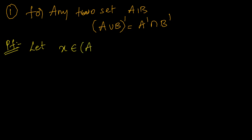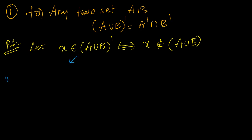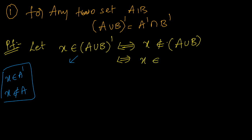The left-hand side is (A union B) complement. If x belongs to A complement, that means x does not belong to the original set A. So if x does not belong to A union B, applying 'does not belong to', we can write x does not belong to A — and here 'or' changes to 'and', because when complement comes union changes to intersection.